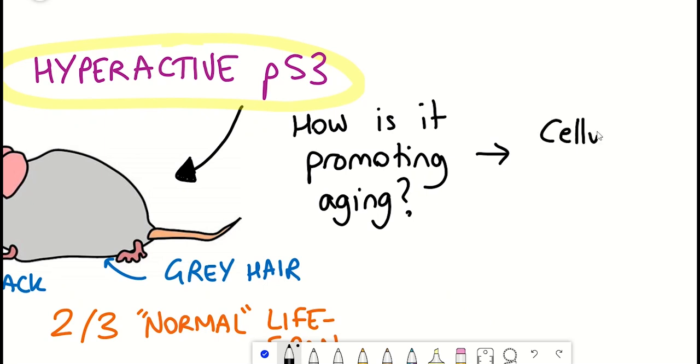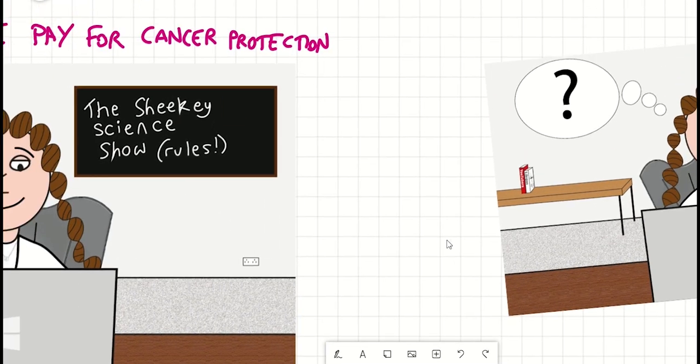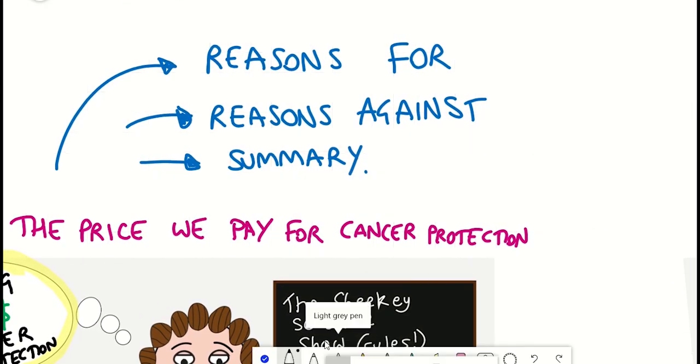So summarizing what I've said so far, P53 can activate a variety of different downstream responses, one of which is cellular senescence. And whilst these can have anti-cancer benefits, they can have pro-aging effects. And so this would be in favor of aging being the price we pay for cancer protection. But what about arguments against this?